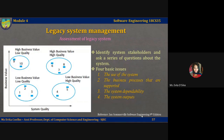When assessing a legacy system you have to look at it from both a business perspective and a technical perspective. From a business perspective you have to decide whether or not the business really needs the legacy system. From a technical perspective you have to assess the quality of the application software and the system's support software and hardware. You can then use a combination of business value and system quality to inform your decision on what to do with the legacy system. In the figure on the slide you can see that there are four clusters of systems.